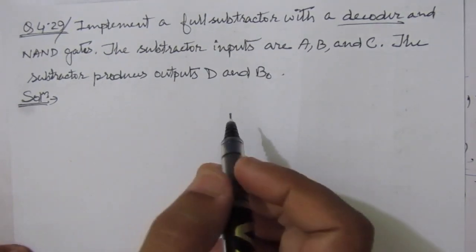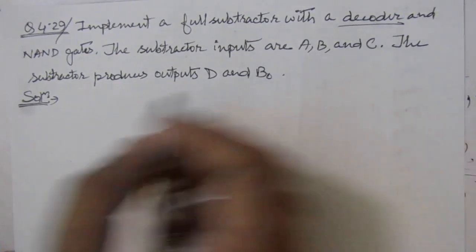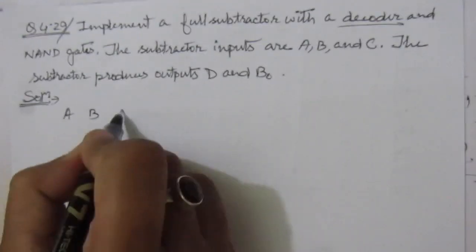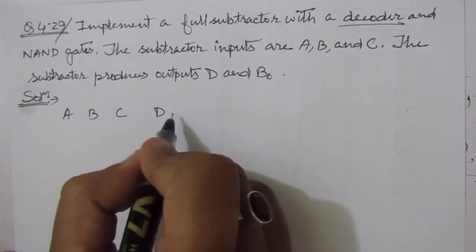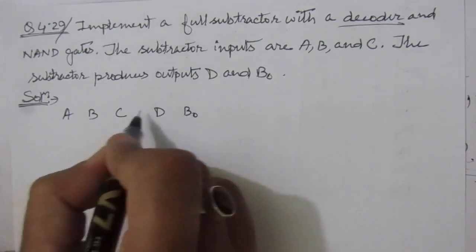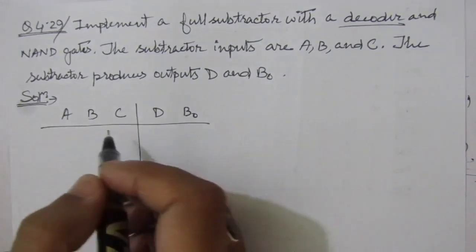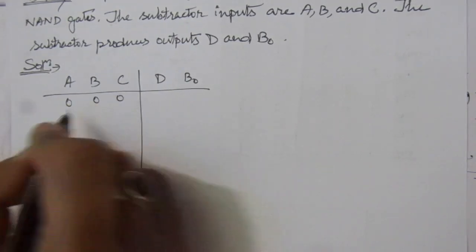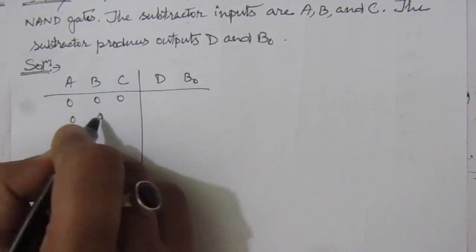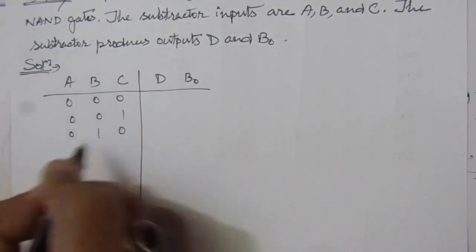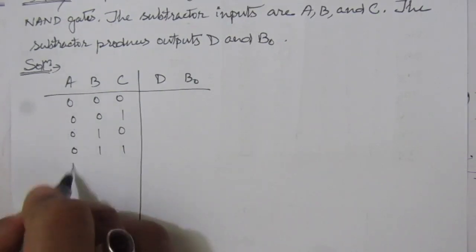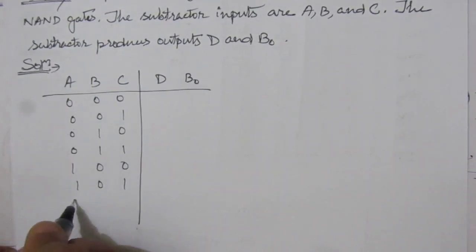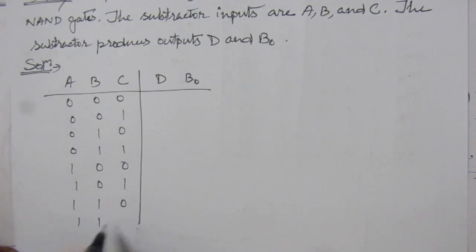So let us make the truth table first. We have three inputs A, B, and C, and two outputs: difference and borrow output. For three inputs we will have eight combinations: 000, 001, 010, 011, 100, 101, 110, and 111.